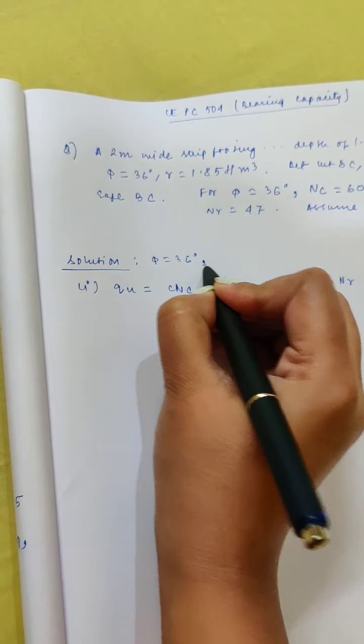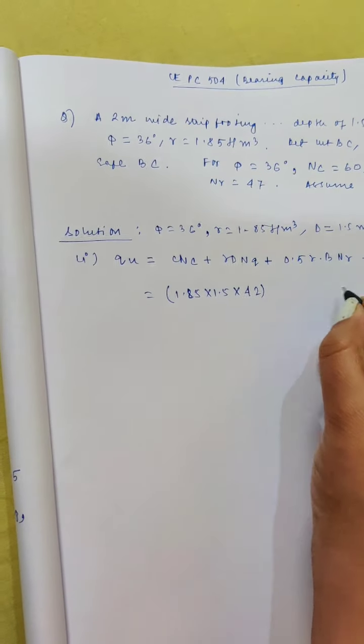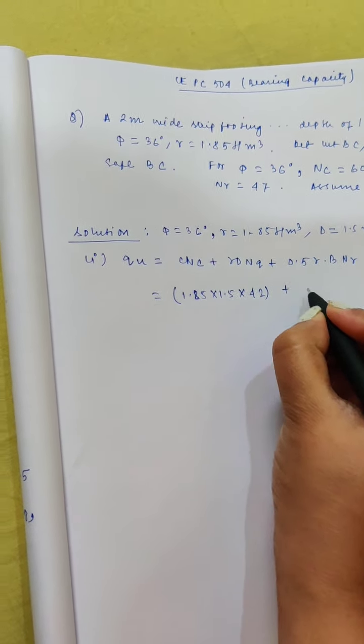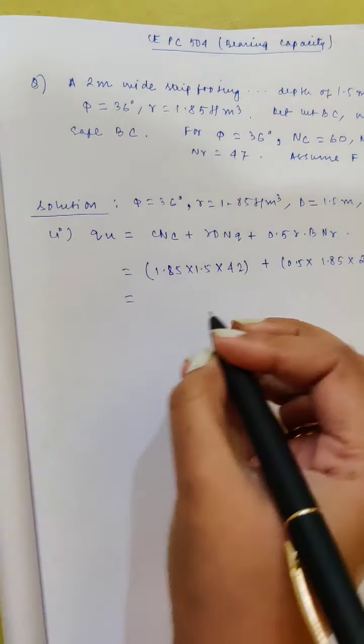First we have to calculate the ultimate bearing capacity. The formula for strip footing is: qu = c·Nc + gamma·D·Nq + 0.5·gamma·B·Ngamma. Here this is a sandy soil, phi is equal to 36 degrees, gamma is 1.85 ton per meter cube, depth D is 1.5 meter, width B is 2 meter, and Nc, Nq, Ngamma are given. Since it is sandy soil, c is equal to 0.